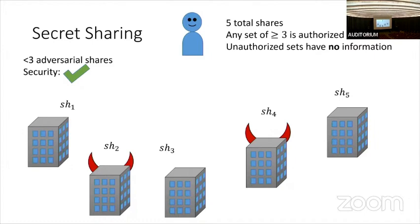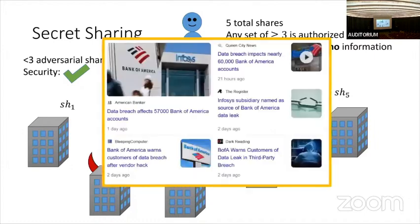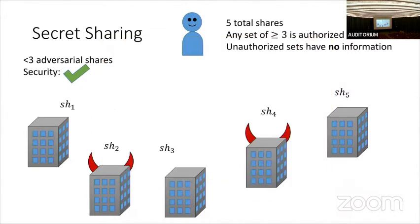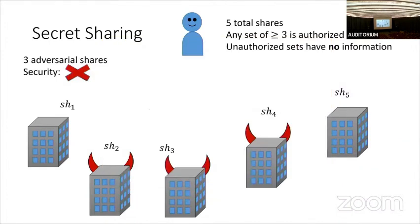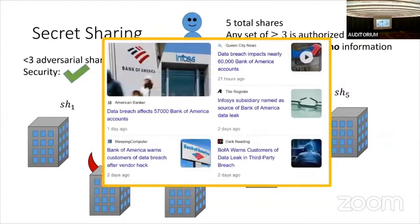We saw earlier in the week during two of the invited talks that hardness assumptions can be nice, but they are assumptions — we don't know if they're actually true or if they're broken. But secret sharing does have one assumption: that the adversary doesn't corrupt too many shares. In a world where data breaches are frequent, it's not necessarily clear how realistic this assumption is. Over long periods of time, the adversary could potentially steal extra shares.